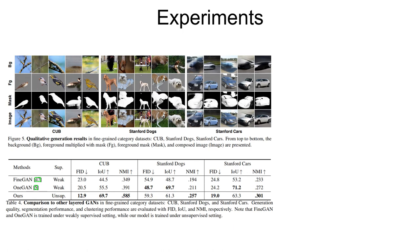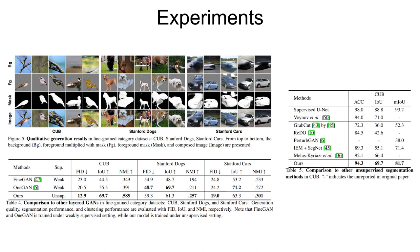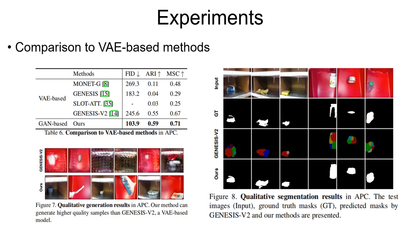Experiment results show that our unsupervised method achieves comparable and even better performance than weakly supervised methods such as FineGAN and OneGAN. We also achieve state-of-the-art unsupervised segmentation performance on CUB dataset. Our method also exhibits ability to generate higher quality images and segmentation than VAE-based methods.